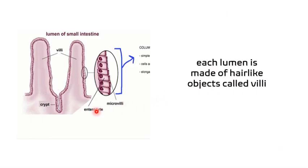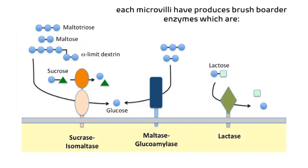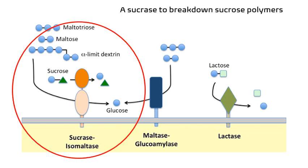However, each lumen is made of hair-like objects called villi, and each villus is composed of cells called enterocytes with a brush-like structure called the microvilli. The function of the microvilli is to produce those brush-border enzymes.